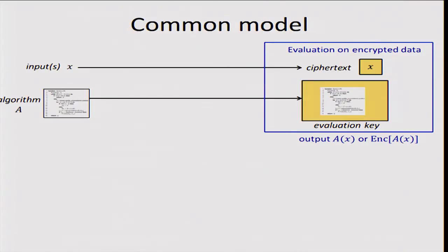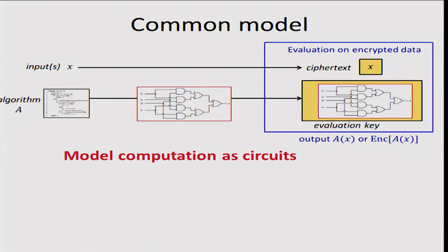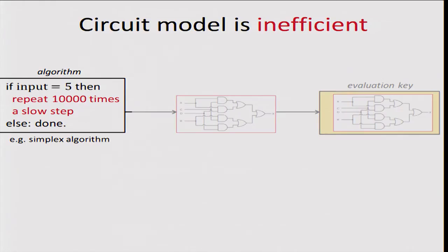Almost all the schemes I mentioned compute on encrypted data using algorithms represented as circuits — they model computation as circuits. The algorithm first gets converted into a circuit, then the evaluation key is generated for that circuit. The circuit model is very inefficient. For example, consider an algorithm that, if the input is 5, repeats something very slow 10,000 times, but otherwise finishes fast. This algorithm runs very fast for almost all inputs except for 5.